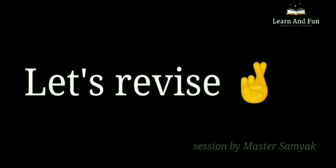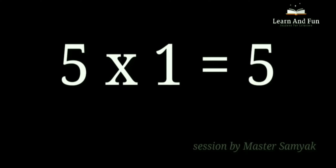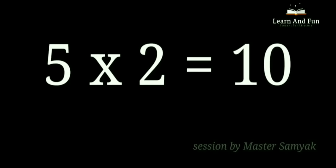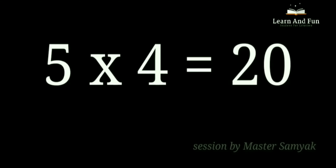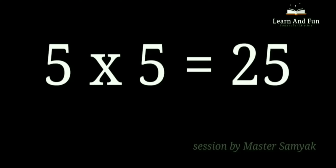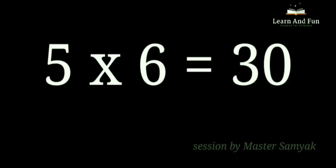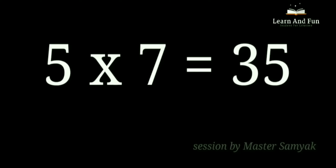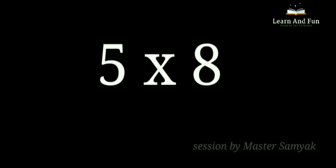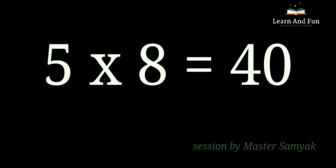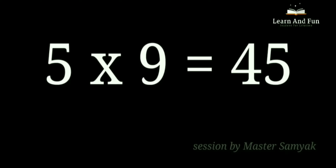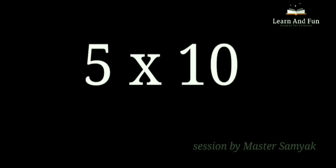Revise. 5 ones are 5. 5 twos are 10. 5 threes are 15. 5 fours are 20. 5 fives are 25. 5 sixes are 30. 5 sevens are 35. 5 eights are 40. 5 nines are 45. 5 tens are 50.